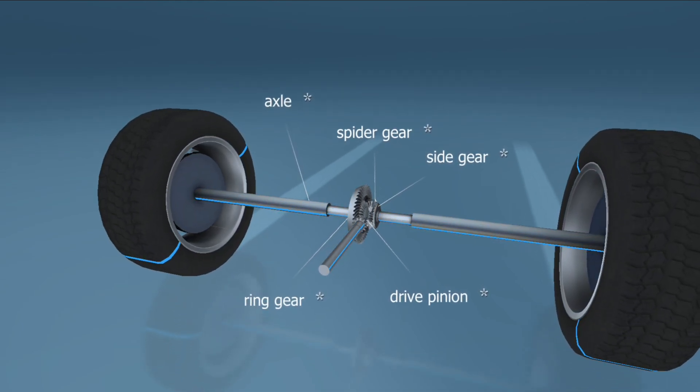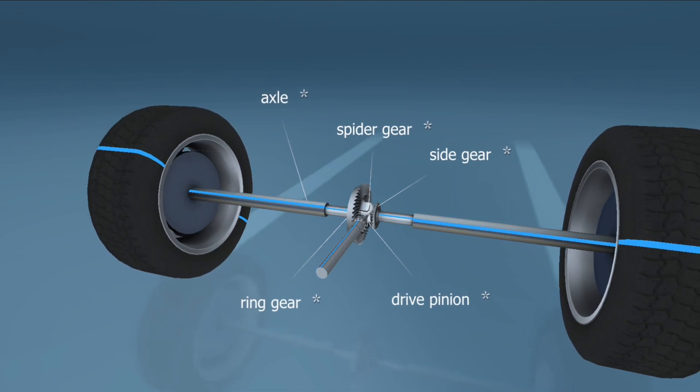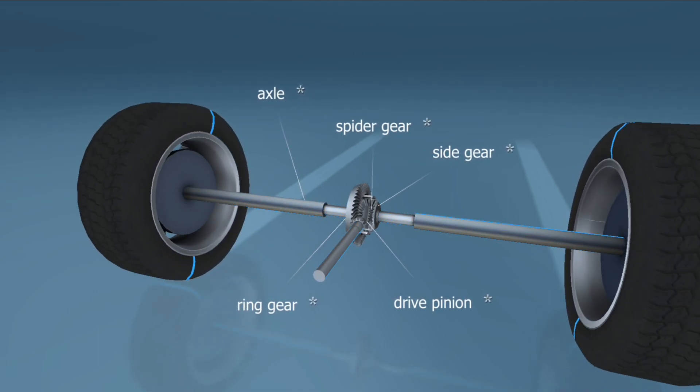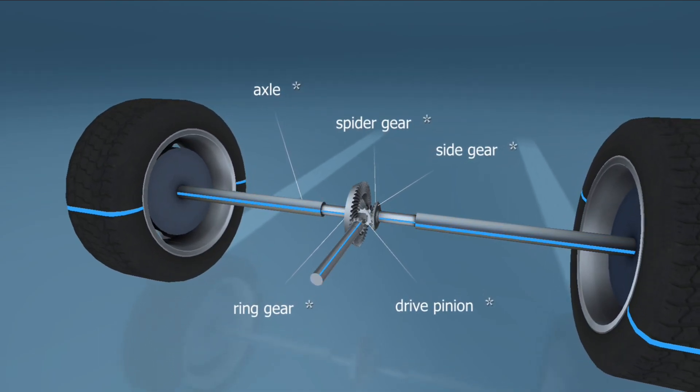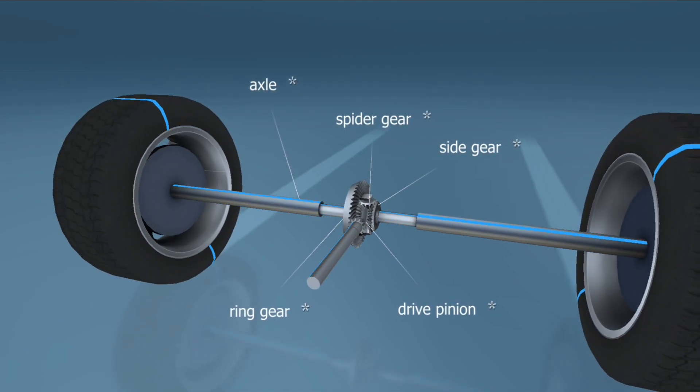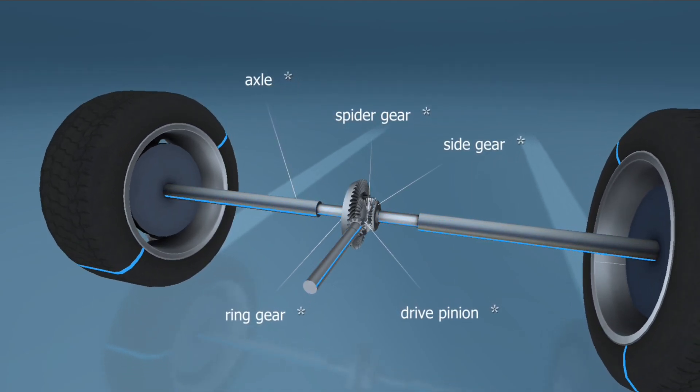The two spider gears are attached to the ring gear, and it can move in two ways. When the car is moving in a straight line, the spider gears rotate together with the ring gear.